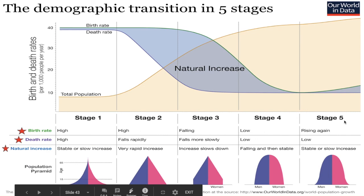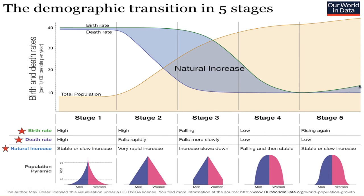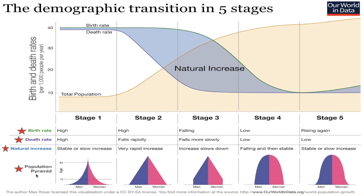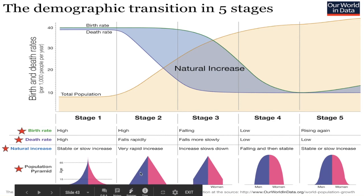Then we get into stage five, and you can see that the birth rate starts rising again, perhaps because the government is encouraging it, or people see that it is a problem — we can't let our population continue to decelerate or the economy is going to collapse. And the death rate remains very low because you still have good health care, a great medical system, and people have consistent food sources. So that death rate stays very low.